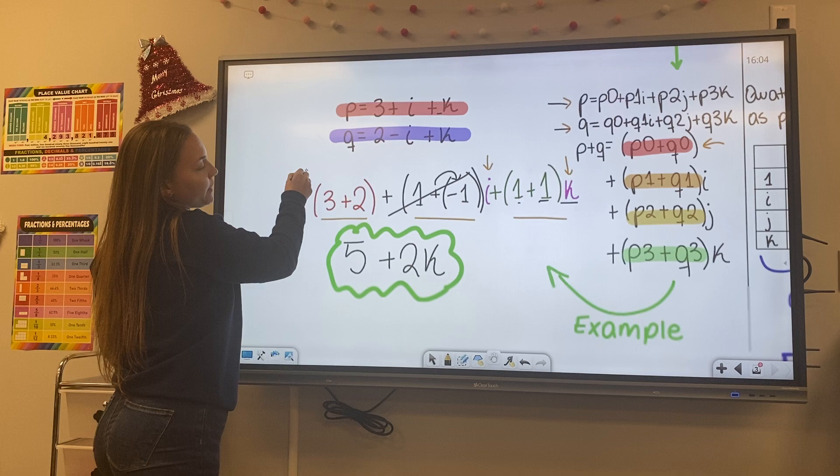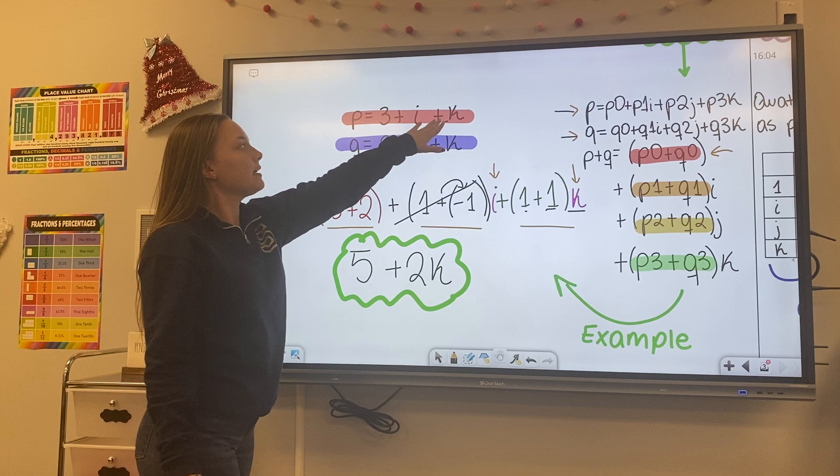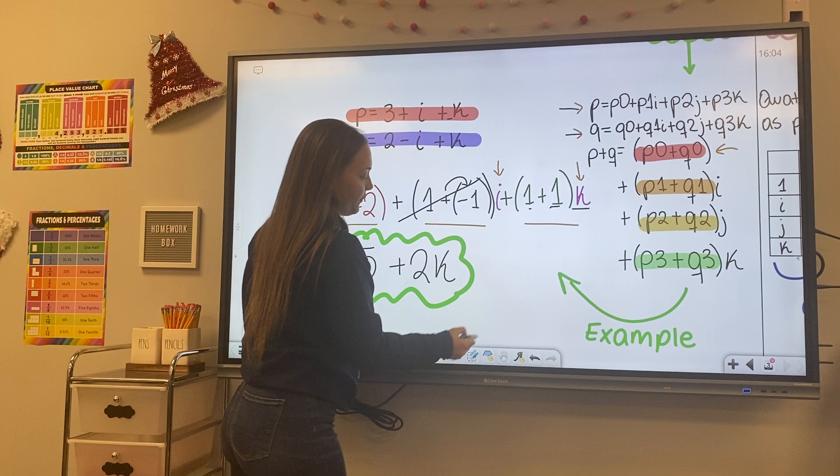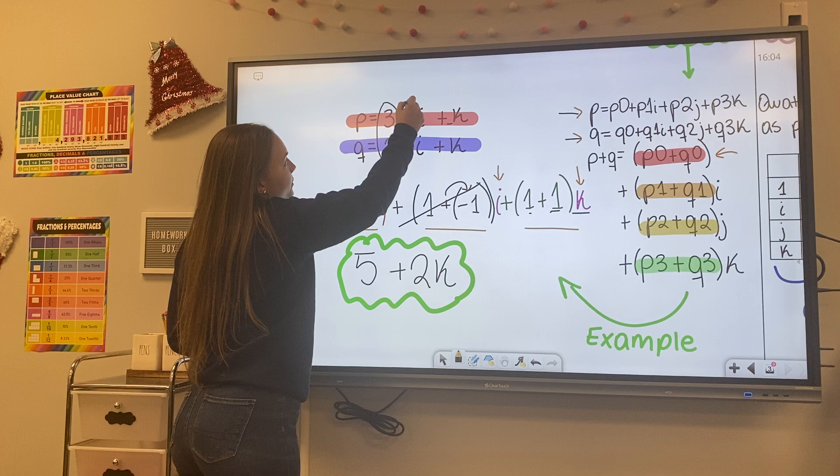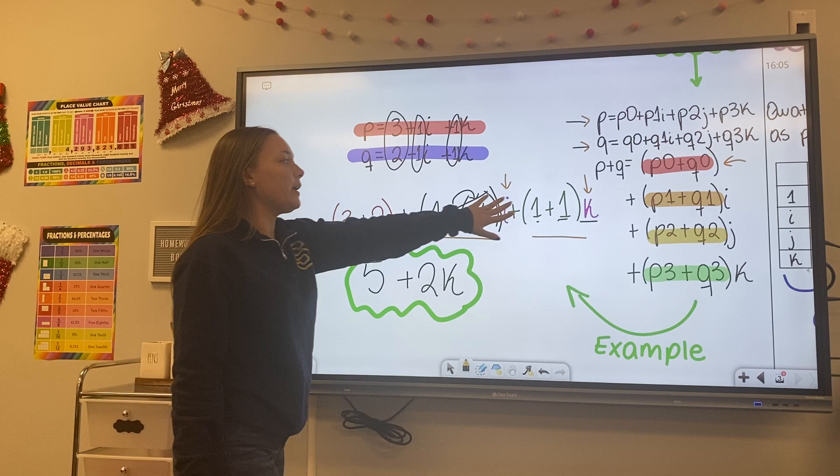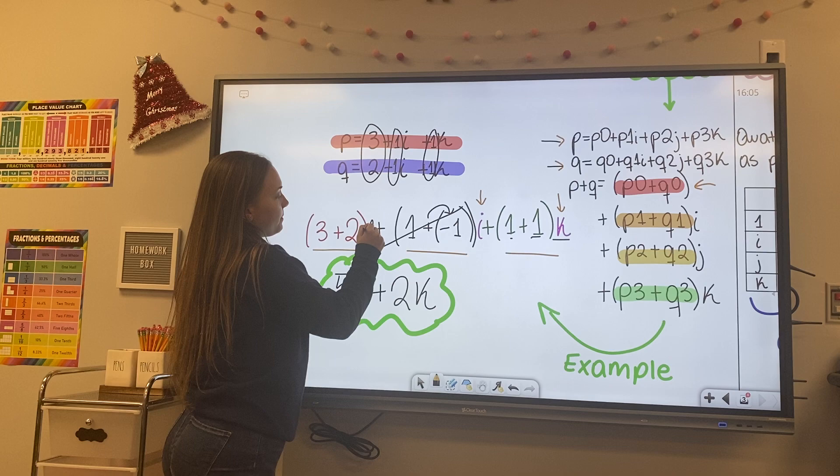So let's look at our example here. So here you can see we have two Quaternions P equals 3 plus I plus K and we have Q equals 2 minus I plus 2J. So in order for us to add these two Quaternions, we're going to focus on our components such as 3, 2. Here remember we have the invisible ones and here as well we have our invisible ones.